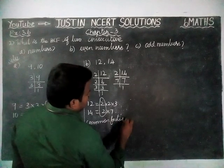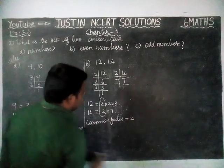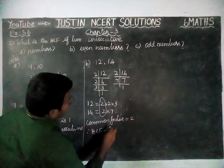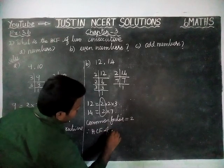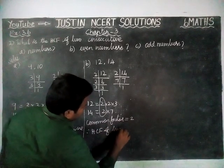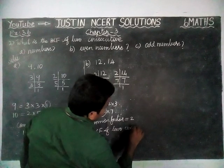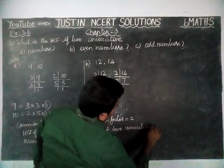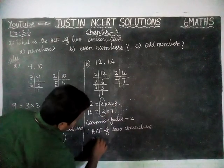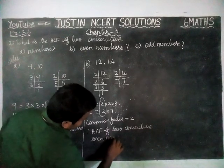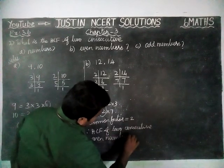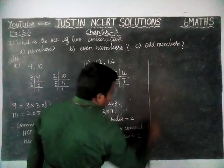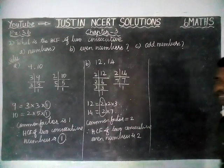The common factor is 2. Therefore, the HCF of 2 consecutive even numbers is 2.